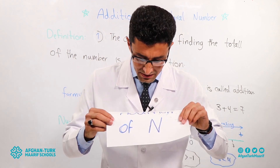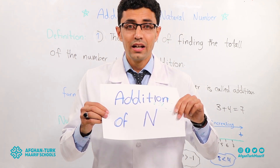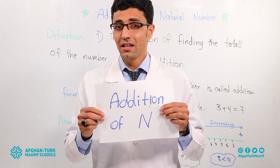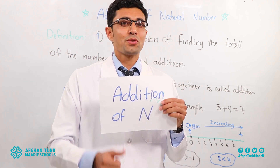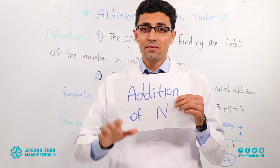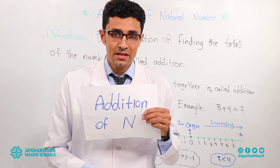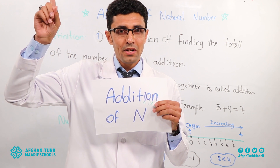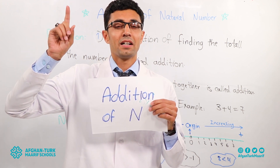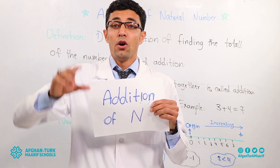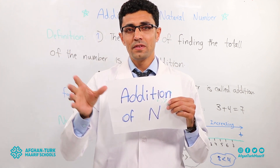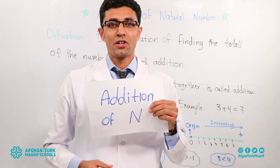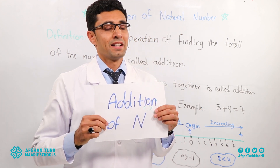What is this? Addition of natural numbers. You said it in the previous lesson — you studied five types of numbers: natural numbers, whole numbers, integers, rational numbers, and irrational numbers. What do we call all five sets of numbers? Excellent — real numbers.